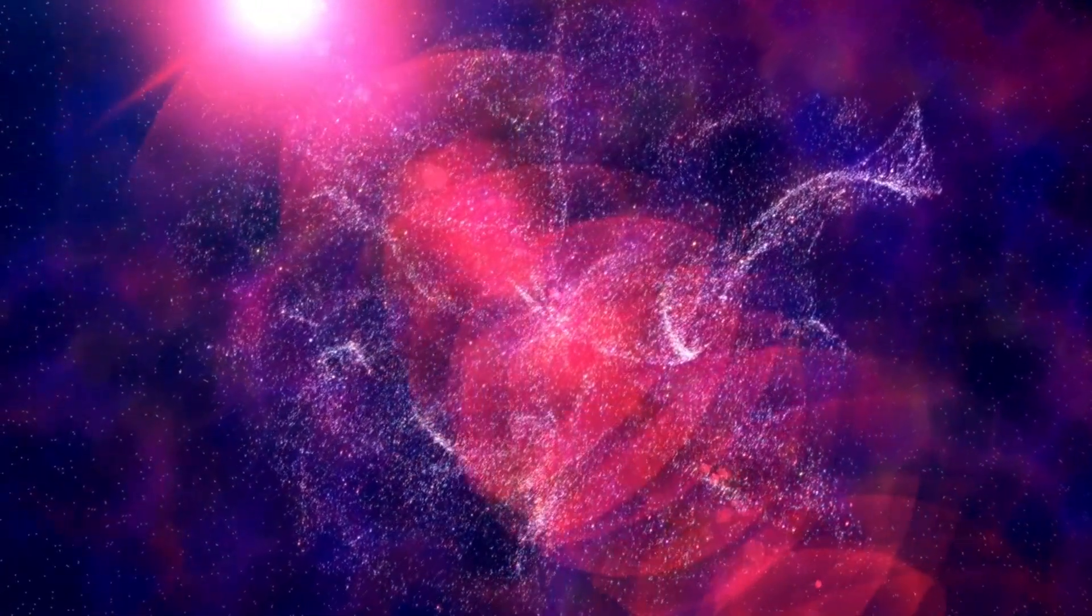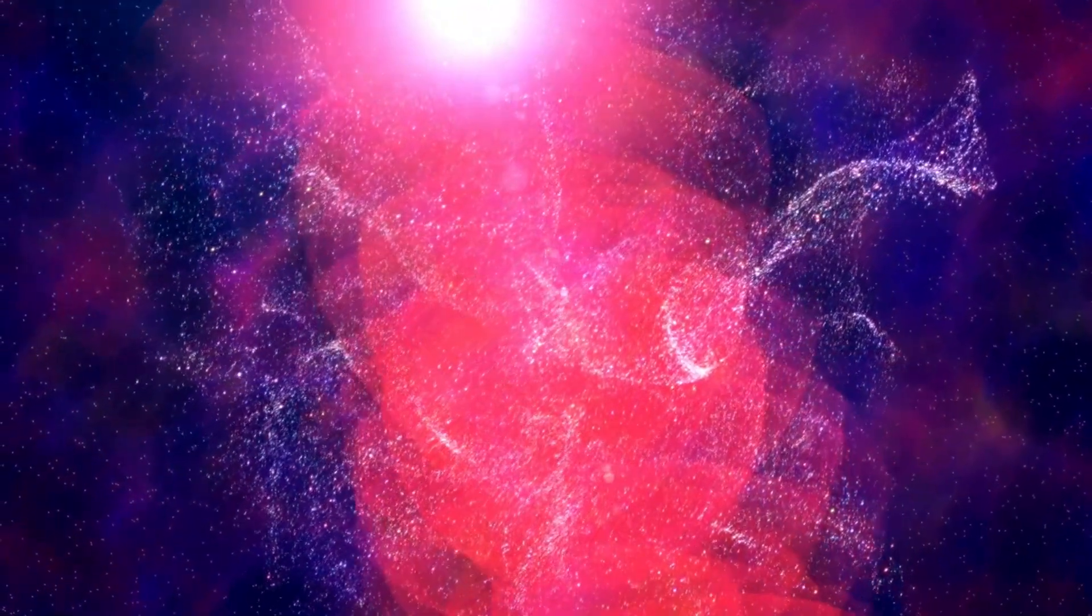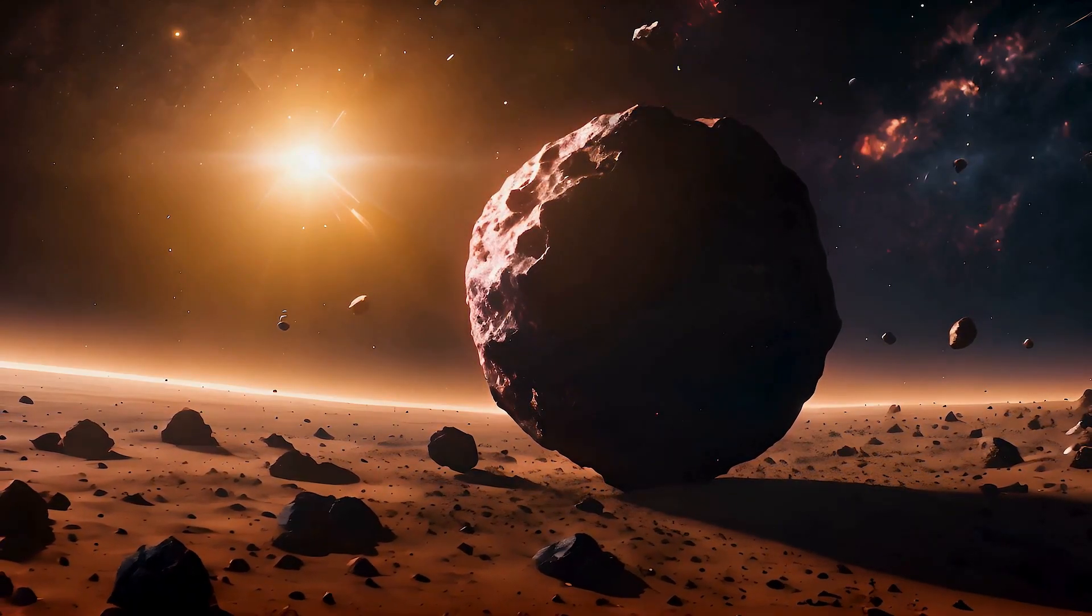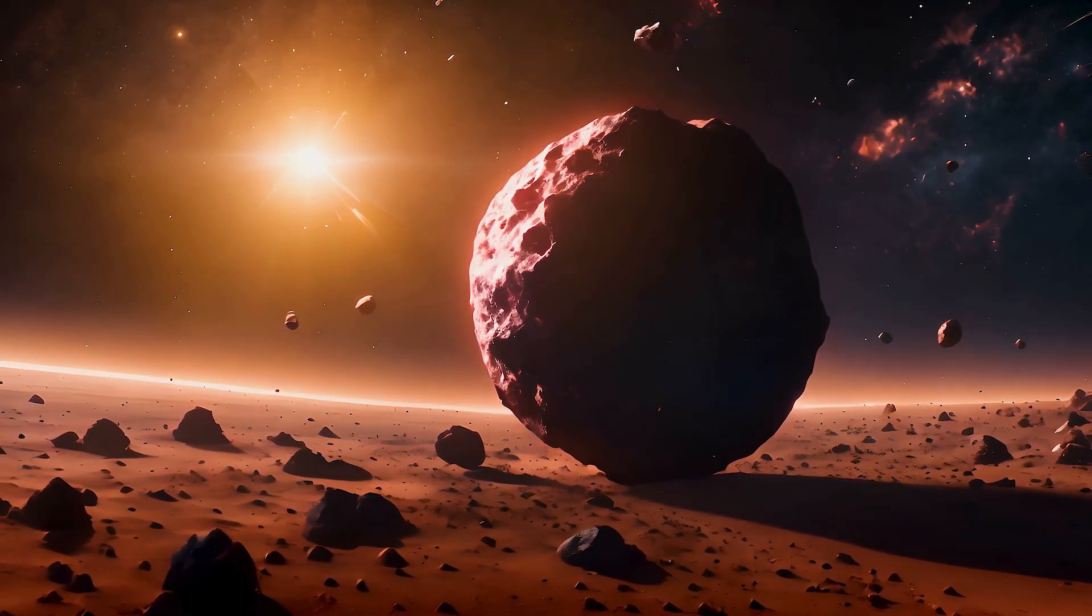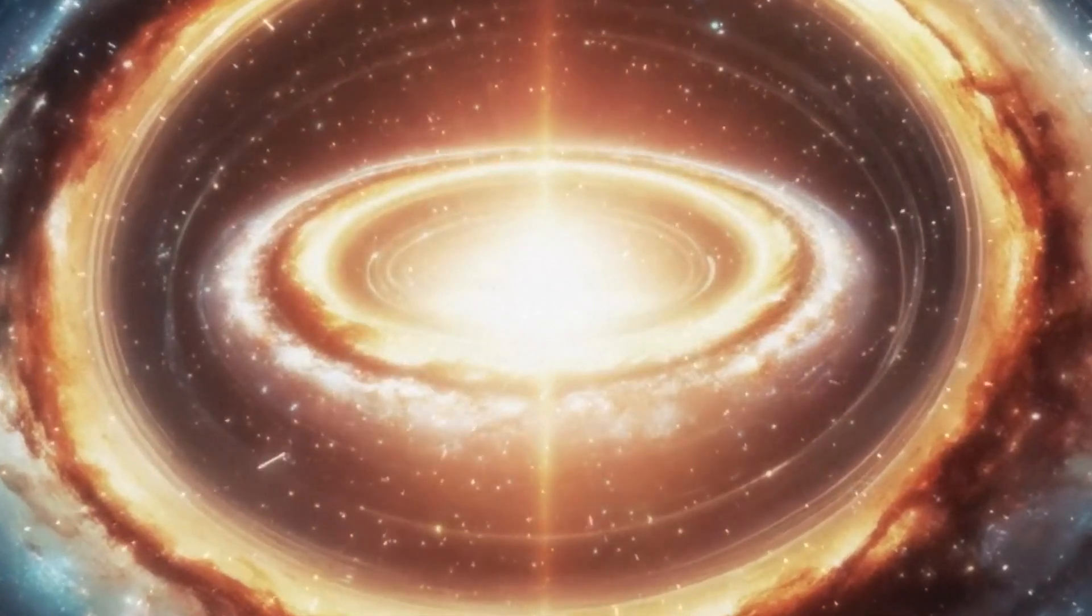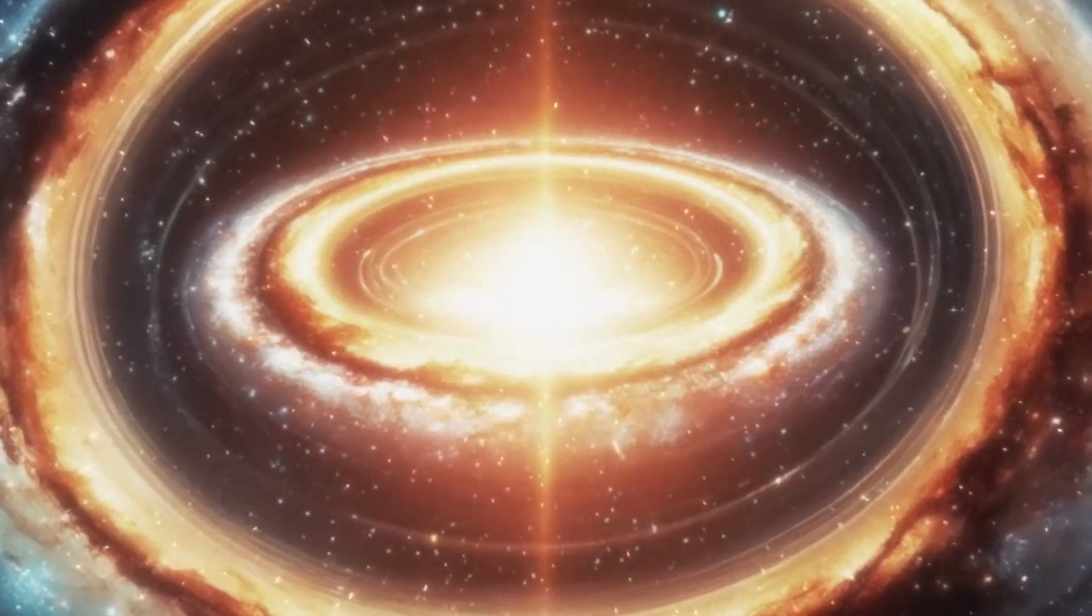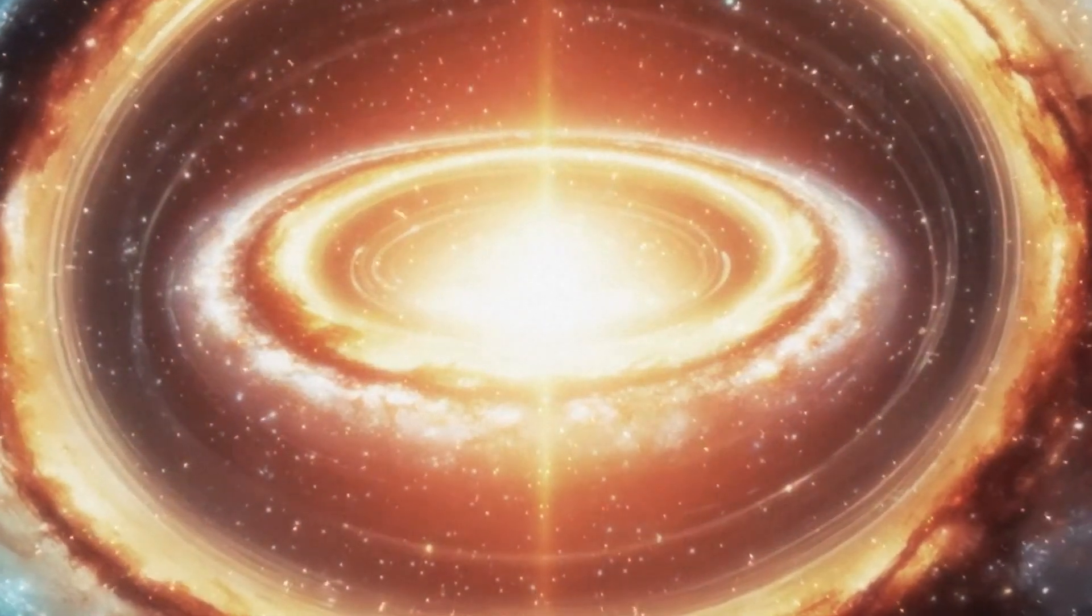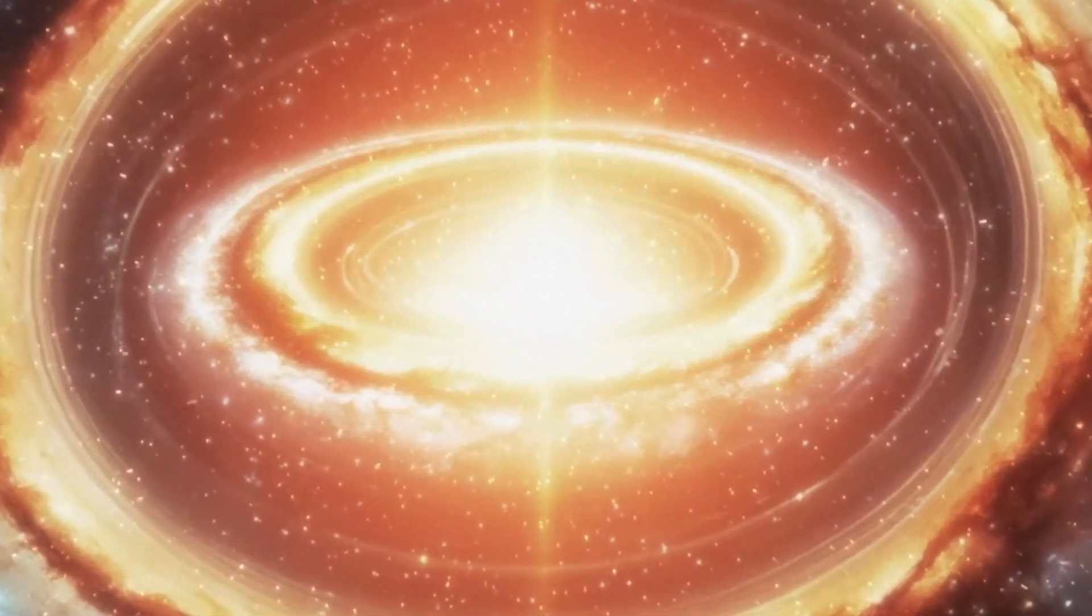However, with advancements in technology, direct imaging of exoplanets is now possible. For an exoplanet to be directly imaged, it must be large enough to be visible by the telescope, far enough from its host star to avoid being hidden by its glare, and young enough to be hot and visible from Earth. These requirements limit the number of exoplanets that can currently be directly imaged, but they offer a fascinating glimpse into the properties and formation of these distant worlds.